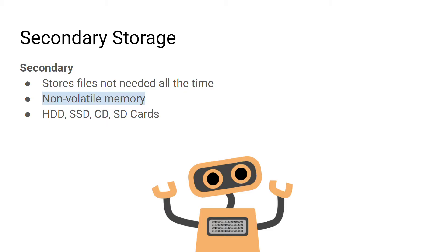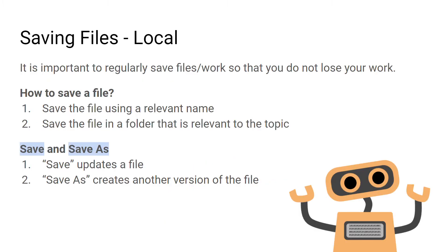All of these storage devices can be referred to as secondary storage — data is not accessed directly by the CPU and is non-volatile, so data remains when the power is off. When saving a file you'll most likely be saving to one of these devices. You might be saving it locally, meaning on the computer right in front of you, or saving it externally. Make sure to save using a relevant file name and in a relevant folder.